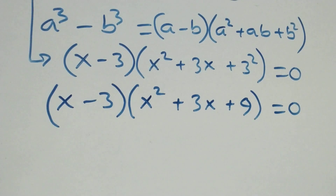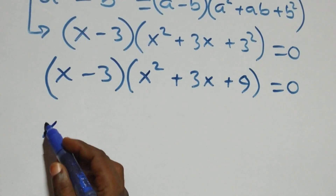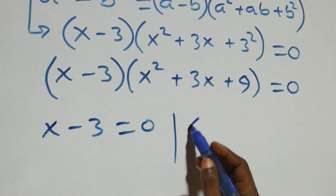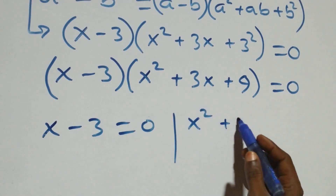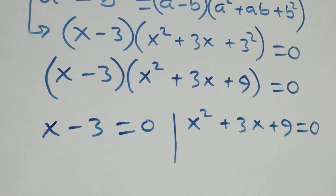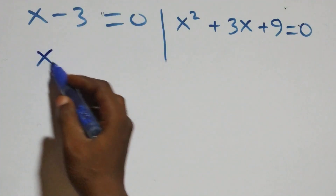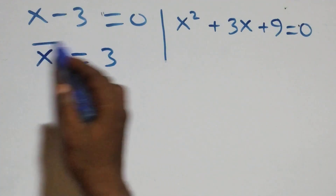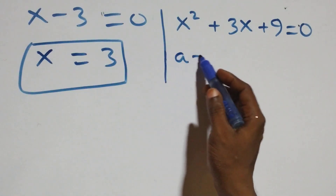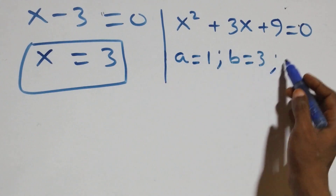From here we have two possible cases: x minus 3 equals 0, or x squared plus 3x plus 9 equals 0. From x minus 3 equals 0, we get x equals 3, which is a real solution. For the quadratic, a equals 1, b equals 3, and c equals 9.